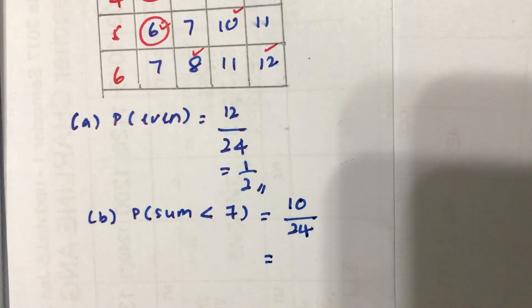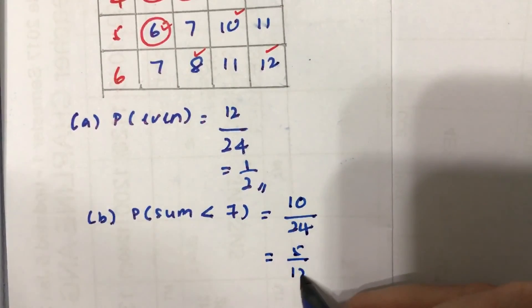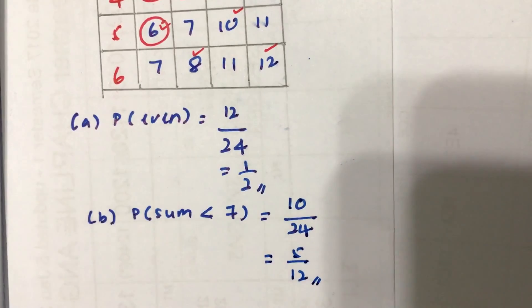Similarly, we will reduce the fraction. So we get 10 out of 24, which simplifies to 5 over 12.